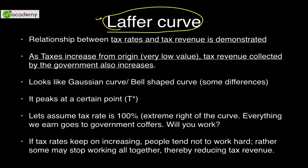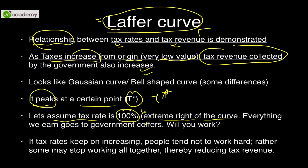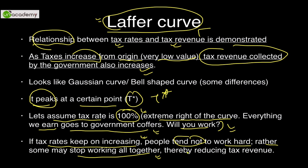Finally, the Laffer Curve demonstrates the relationship between tax rates and the tax revenue collected by the government. As taxes increase from very low levels, tax revenue collected also increases up to a certain optimal point called T-star. If the tax rate were raised to 100%, everything earned goes to the government, so people would stop working — meaning no revenue. As tax rates keep increasing beyond T-star, people are not sufficiently incentivized to work, reducing total tax revenue.